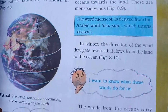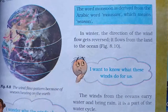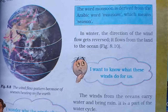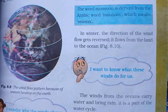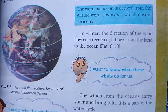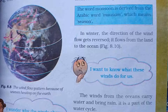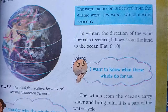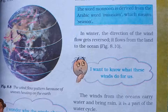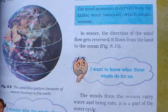In winter, the temperature of the land is lower than that of the ocean, so the air from the land flows towards the ocean. In summer, the air from the ocean moves towards the land, because the air over the land gets very heated and rises upward. The wind from the ocean carries water and brings rain.